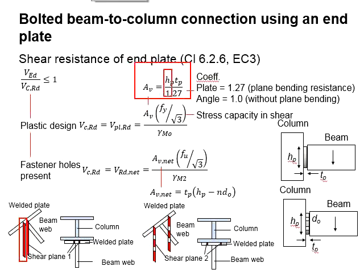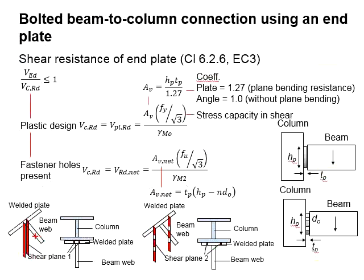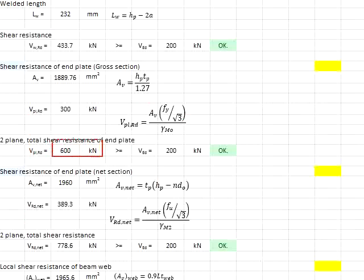You get your shear resistance equals to 300 kN. The 300 kN refers to 1 shear plane as indicated by Av of Hp times the thickness of the plate. The calculated value of 300 is to be multiplied by 2 for 2 shear planes as indicated here, which gives you 600 kN.